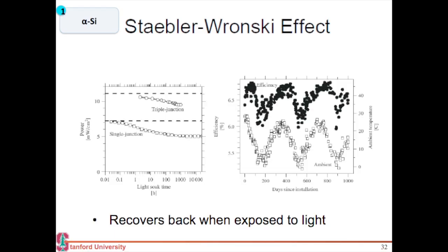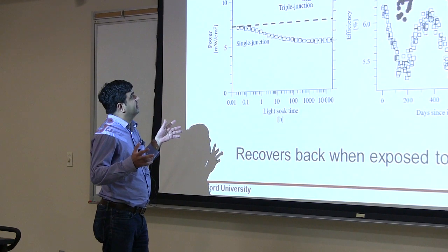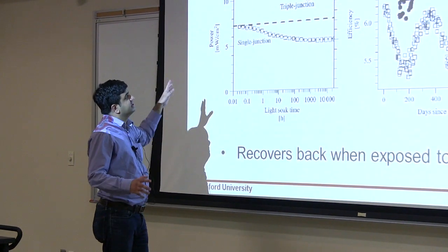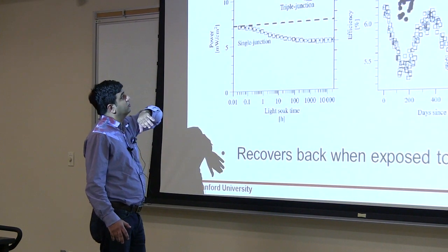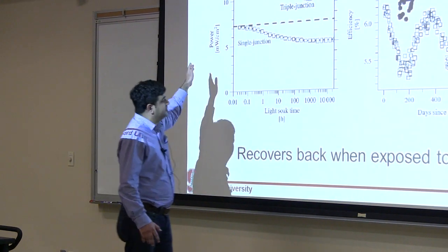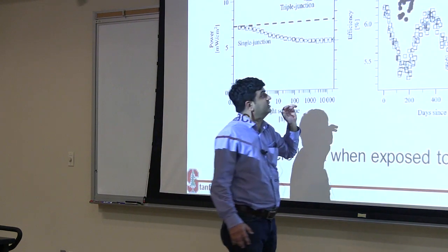One of the main problems with amorphous silicon-based cells is that they degrade with light. If you take an amorphous silicon cell and let it sit in light for a long period of time, your efficiency or power will degrade as a function of time. This degradation is even more severe in tandem cells with amorphous silicon and microcrystalline — it's like a relay race where if one runner is slow, it brings everybody down. So if one cell in the tandem degrades, it degrades the whole thing even more.